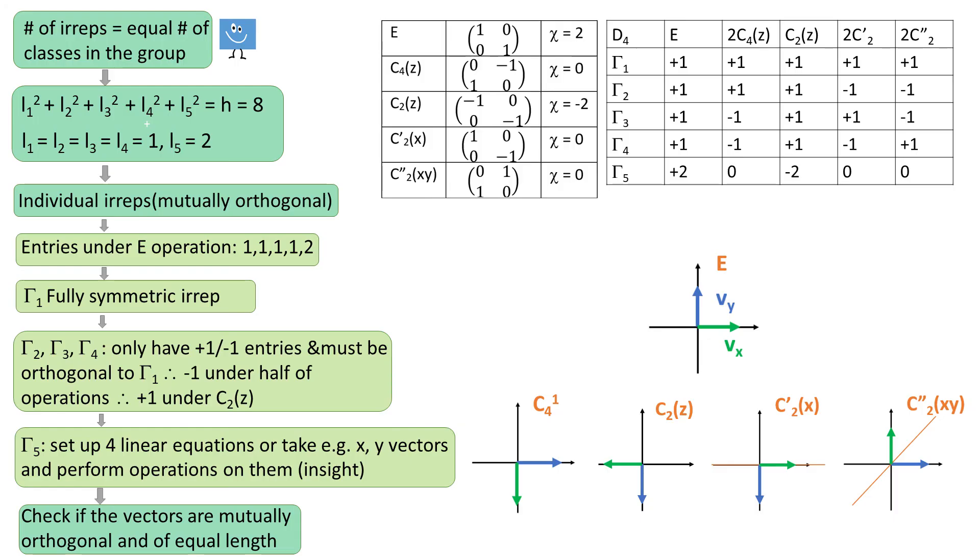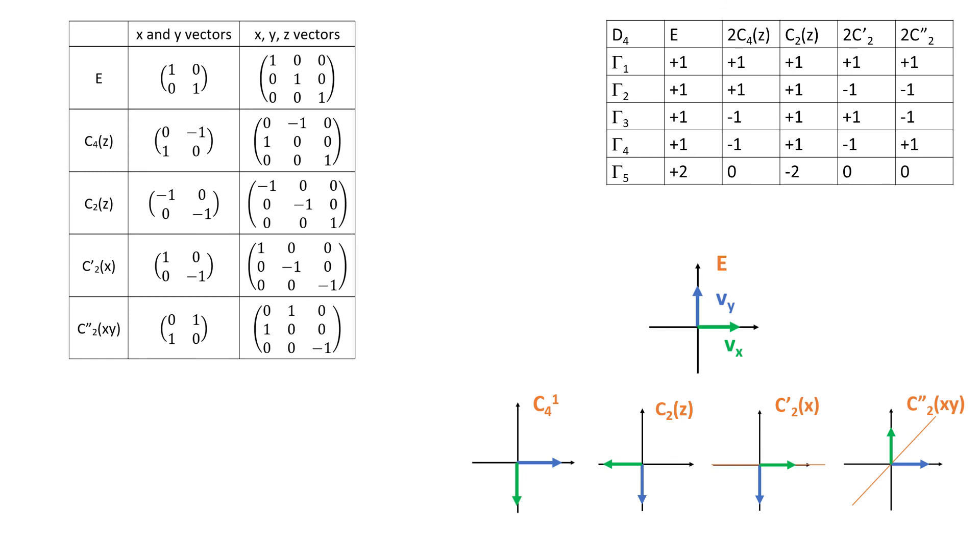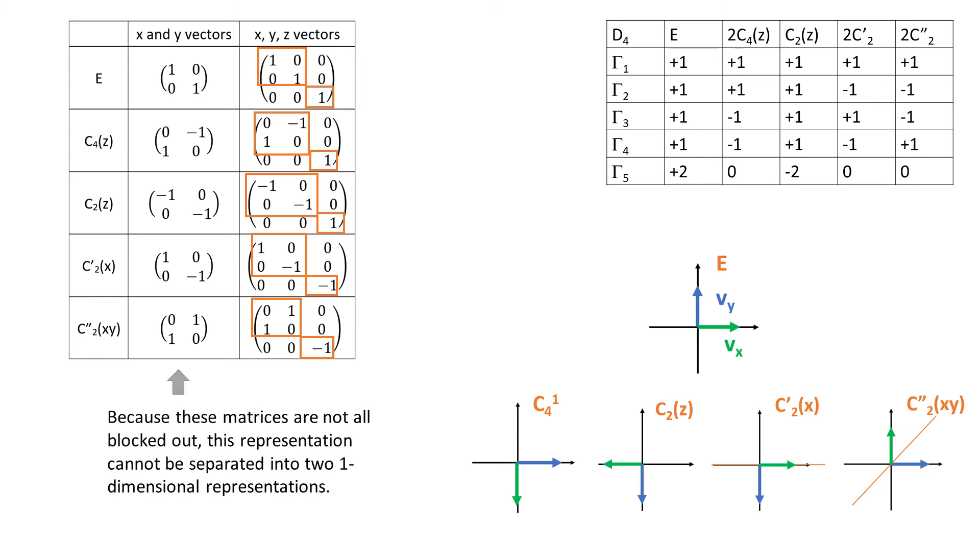And we have exactly the same situation in D4 group. These matrices that we see are 2x2, but we can expand them and include the z vector. Again, the 3x3 matrices break into 2x2 block and 1x1 block and we can see that the z vector is described by tau2 and x and y vectors are under one two-dimensional representation.